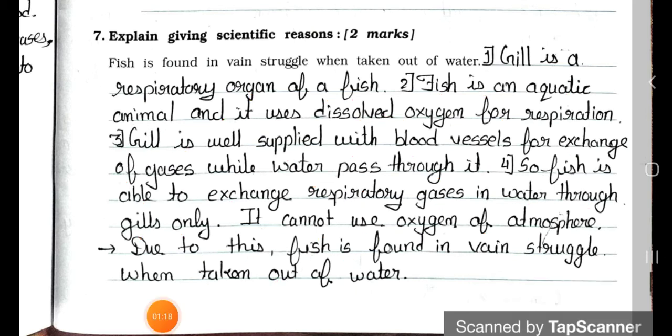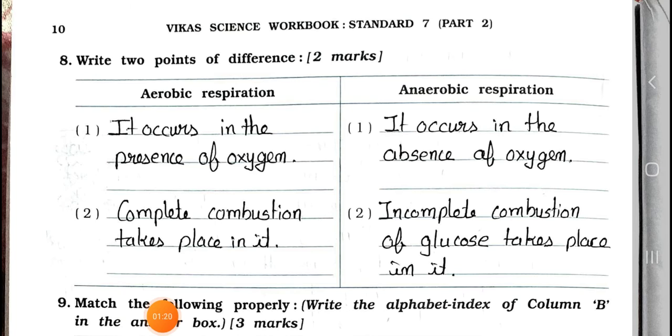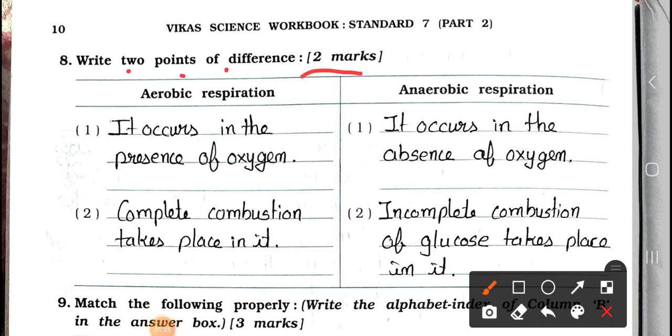Now see the next page. See question 8. Write two points of difference. It carries two marks. Difference between aerobic respiration and anaerobic respiration. Point 1: Aerobic respiration occurs in the presence of oxygen. Anaerobic respiration occurs in the absence of oxygen. Point 2: Complete combustion takes place in aerobic respiration, and in anaerobic respiration, incomplete combustion of glucose takes place in it.